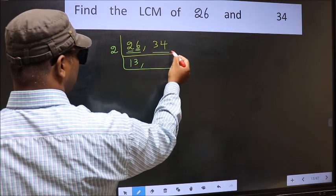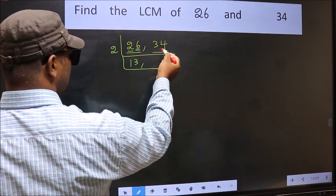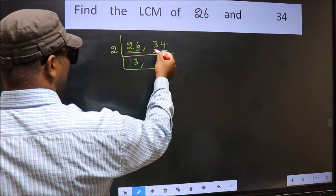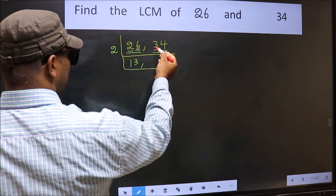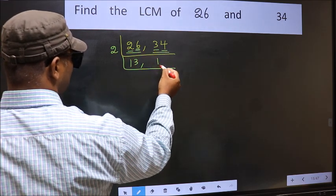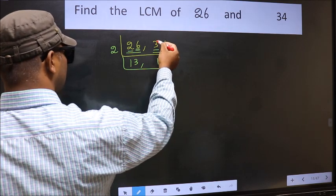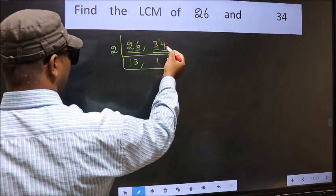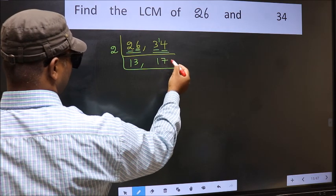Now the other number 34, last digit 4, even so this is divisible by 2. First number 3, a number close to 3 in 2 table is 2 times 1 is 2. 3 minus 2 is 1, 1 carried forward 14, when do we get 14 in 2 table? 2 times 7 is 14.